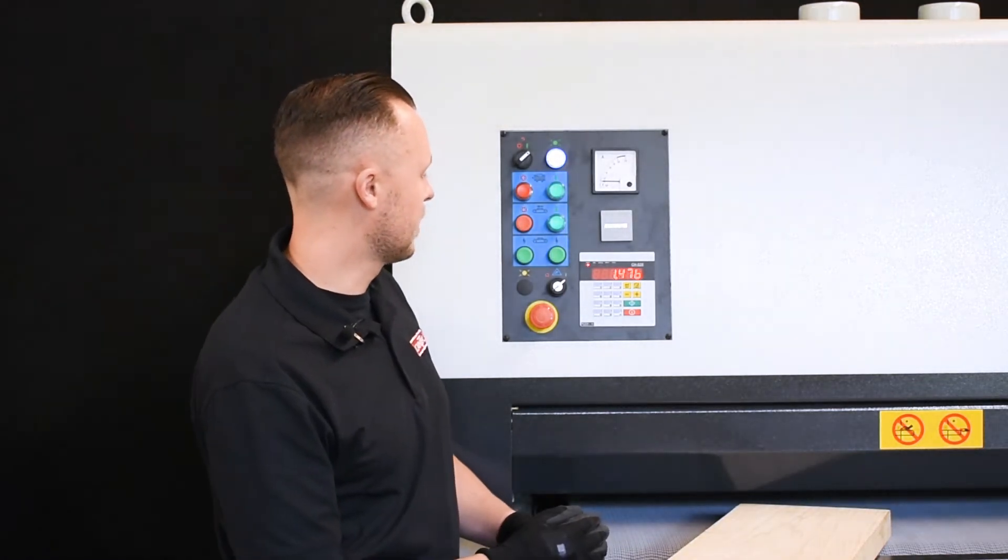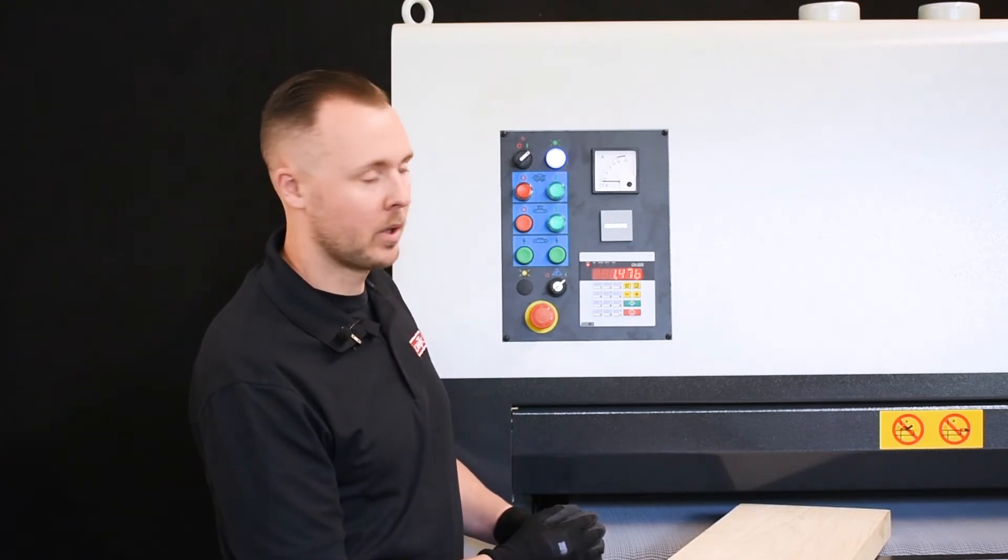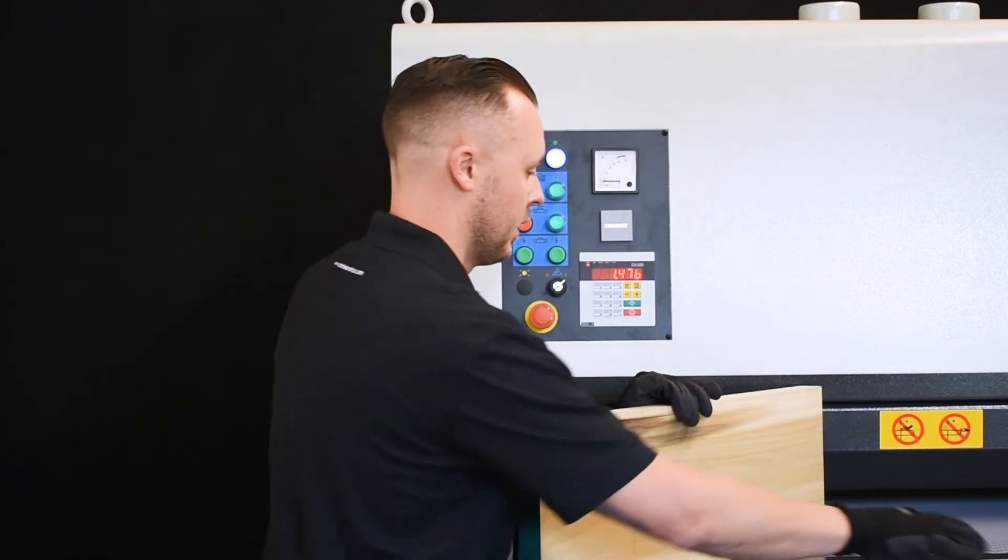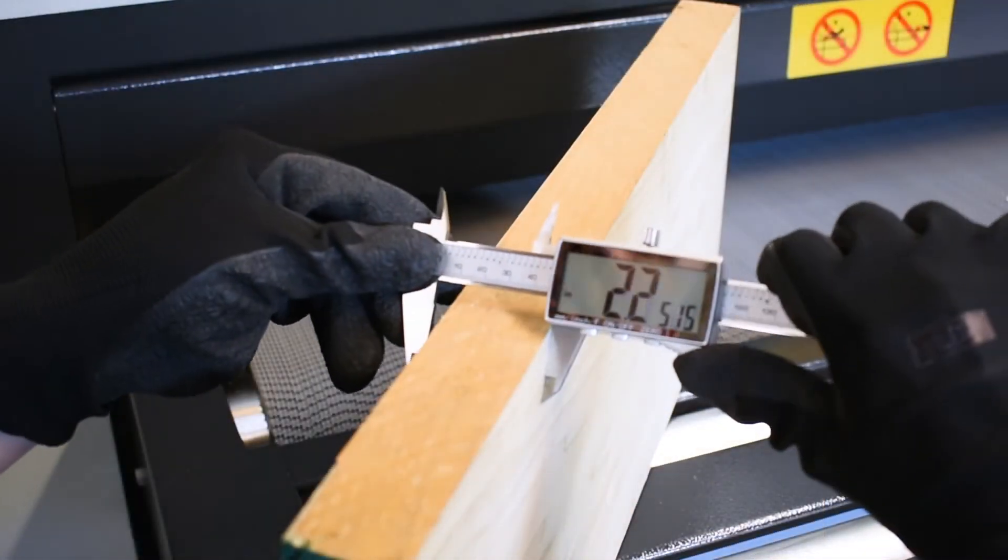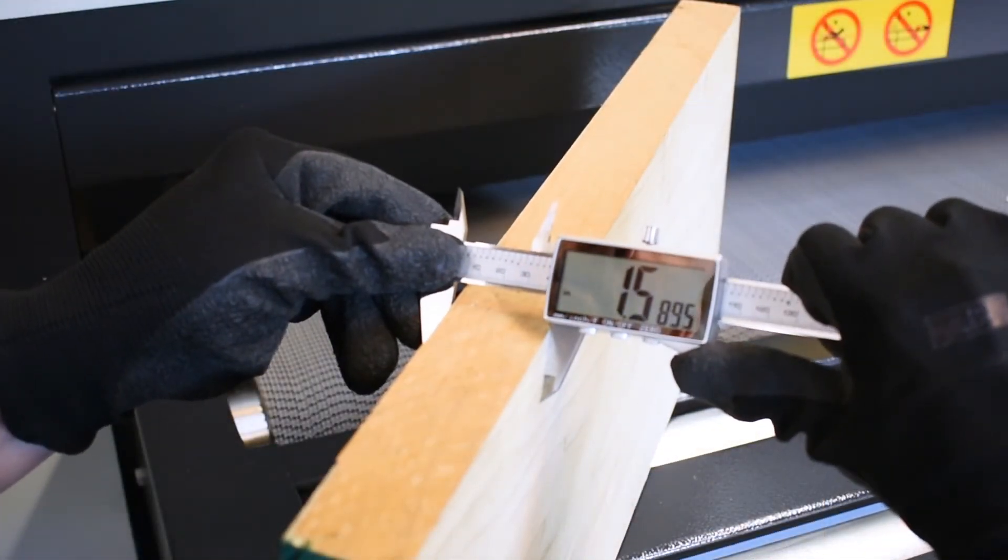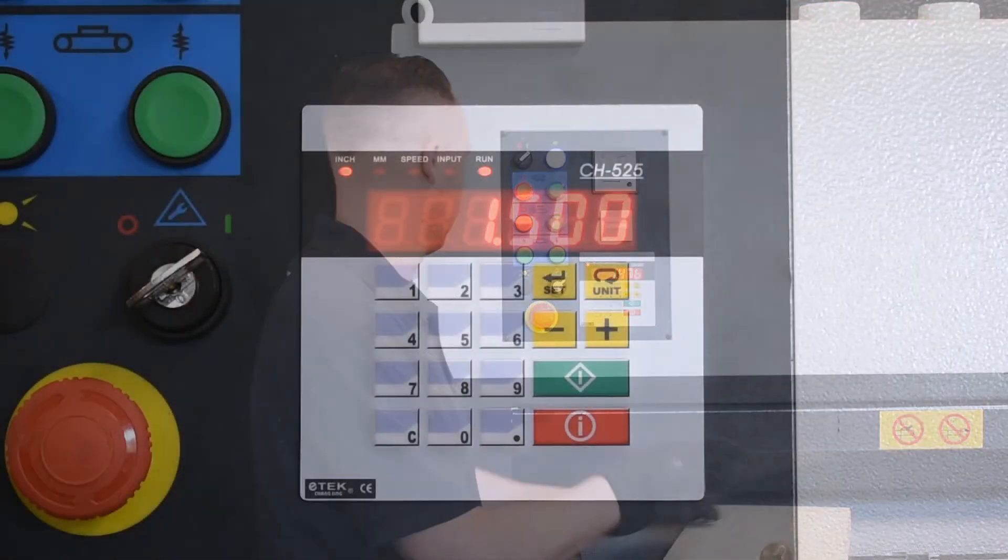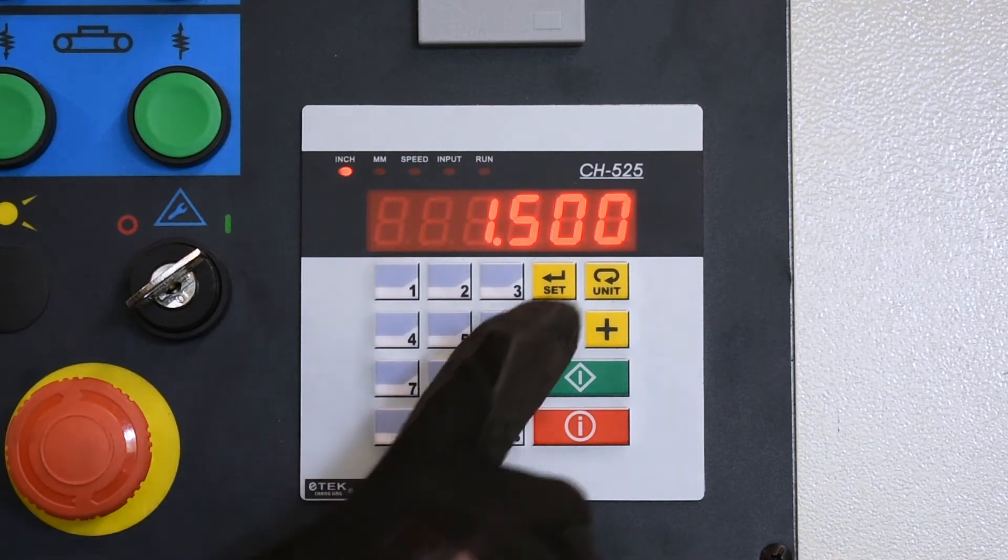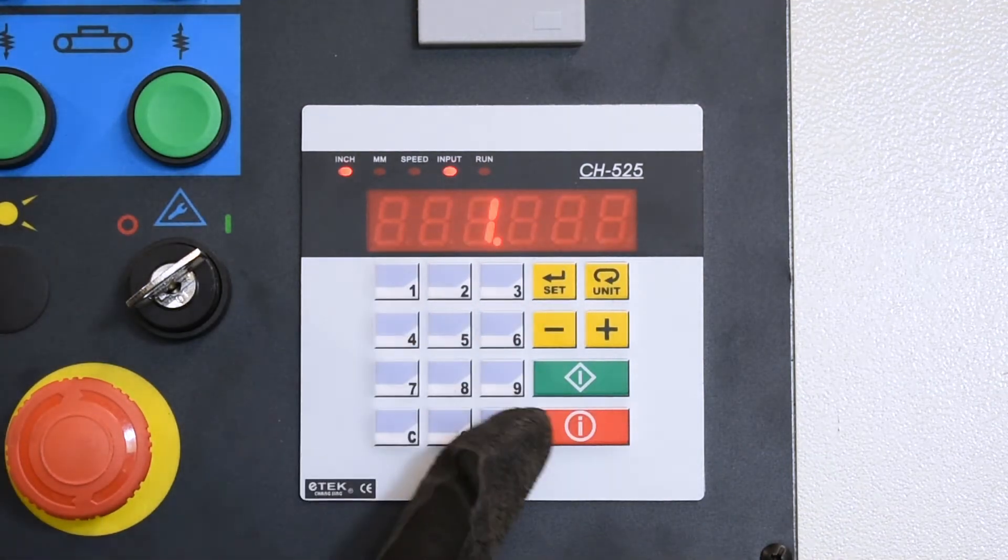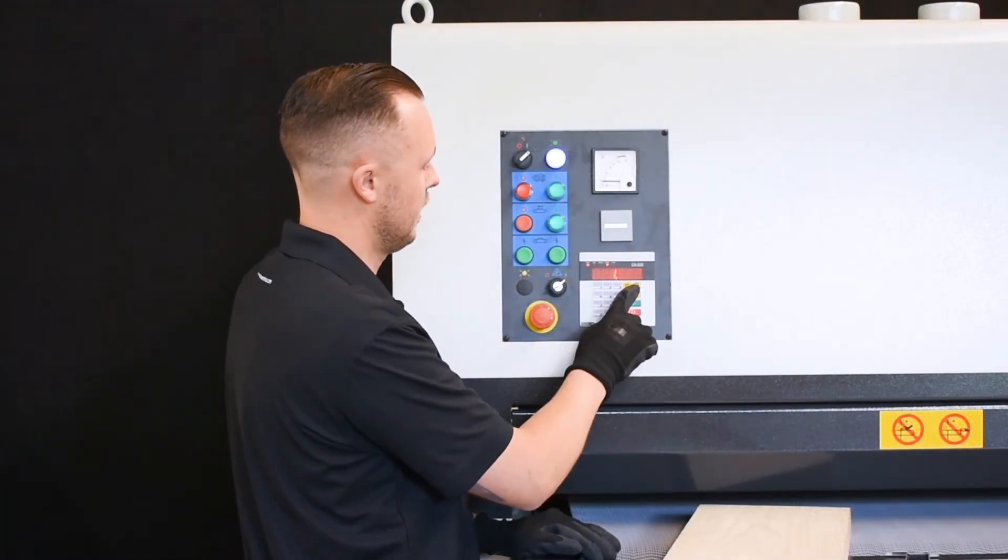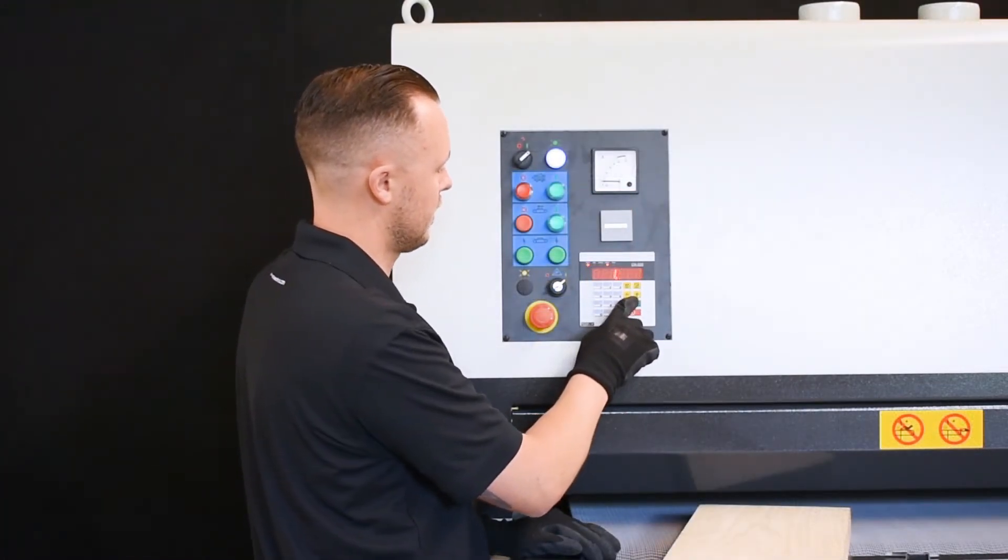So first thing we'll do is we'll just key in a dimension that we want to get to. We'll typically measure our material. So 1.58. We can press set to enter that. 1.580. Again you can press start.